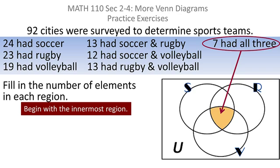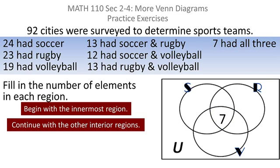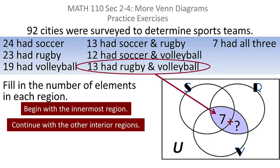I'm told that seven of those cities had all three of those sports, so I put seven in the dead center. Then I'm going to wind my way out, so I'll continue with these other interior regions. For instance, I might look at the region where rugby and volleyball overlap. I'm told there have to be 13. I already have seven, so that means I need six more.